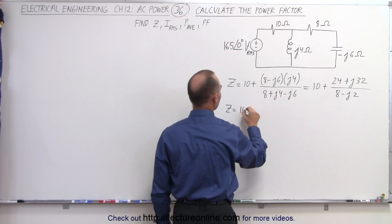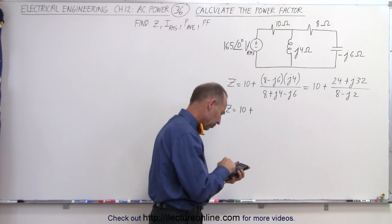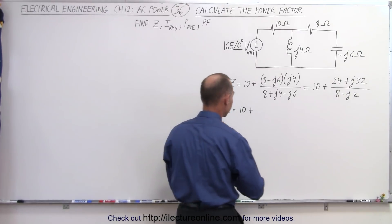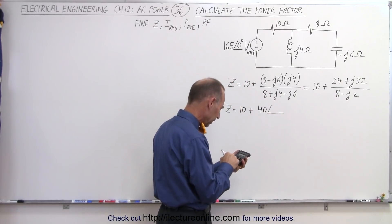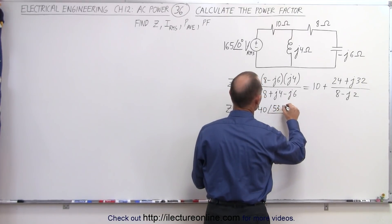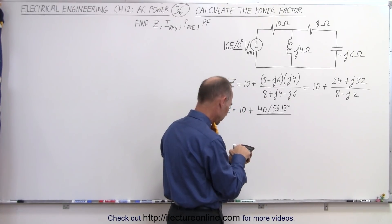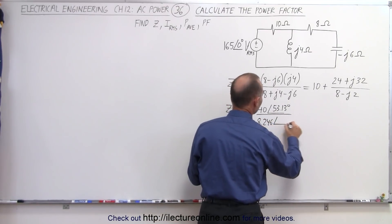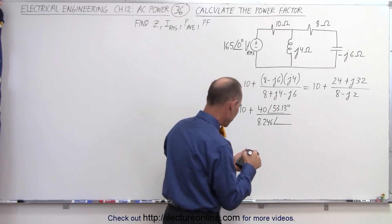Z equals 10 plus: for the numerator, 24 squared plus 32 squared equals 1600, so the magnitude is 40, with a phase angle of inverse tangent of 32 over 24, which is 53.13 degrees. For the denominator, the square root of 64 plus 4 is 8.246, with a phase angle of inverse tangent of 2 over 8, which is minus 14.04 degrees.